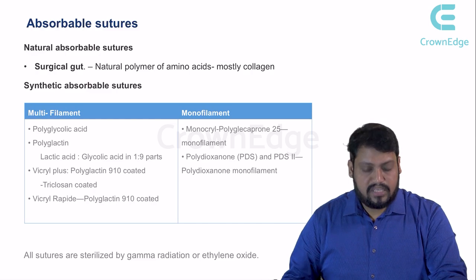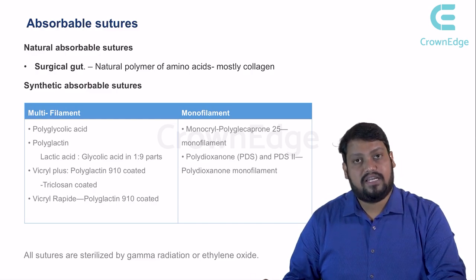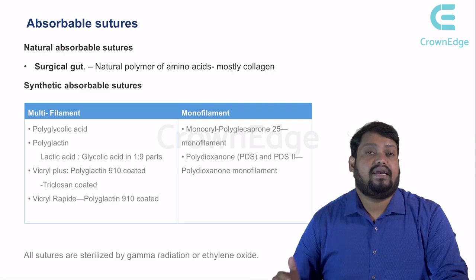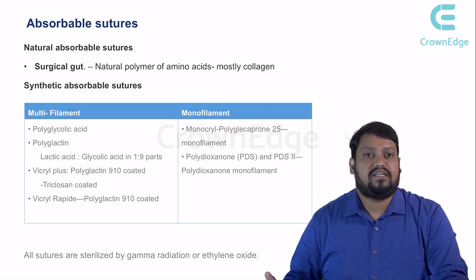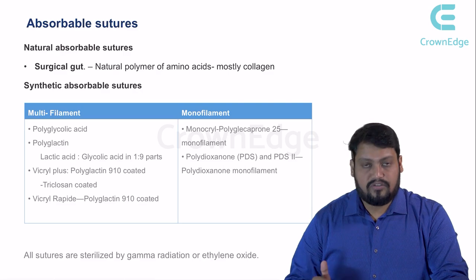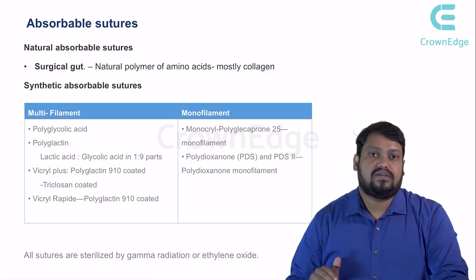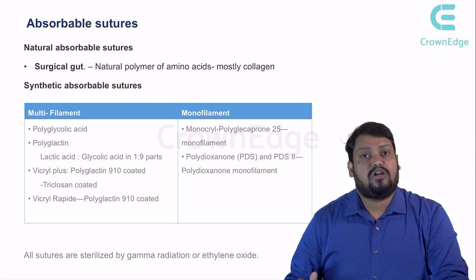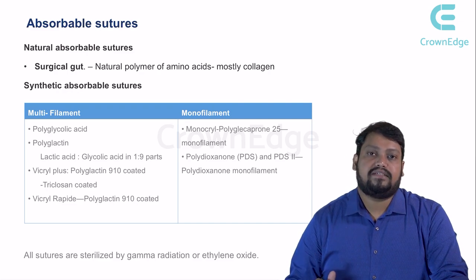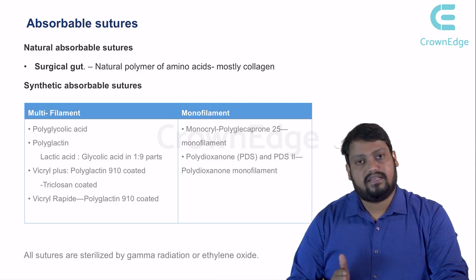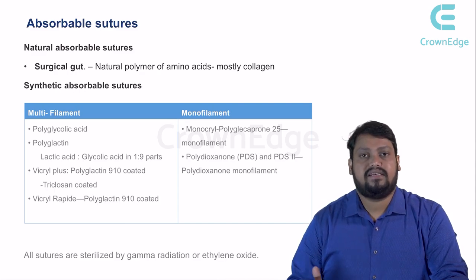All these sutures are sterilized either by gamma radiation or by ethylene oxide. This can also be asked in exam questions. Ethylene oxide is used where there is not much leaching, while gamma radiation causes slight flaking. Depending on the material, the sterilization method differs.